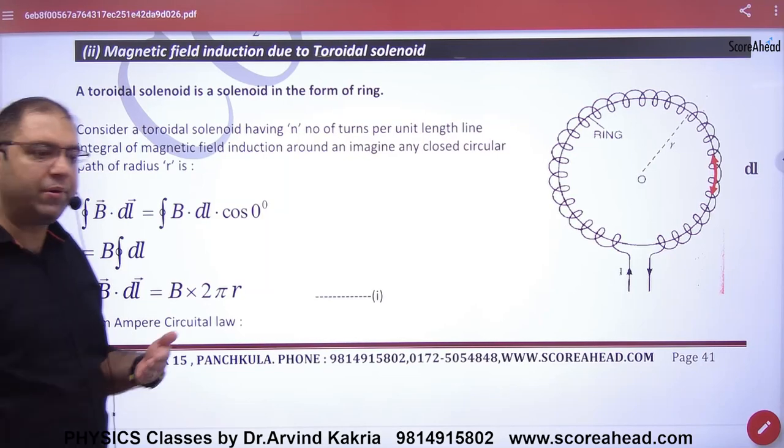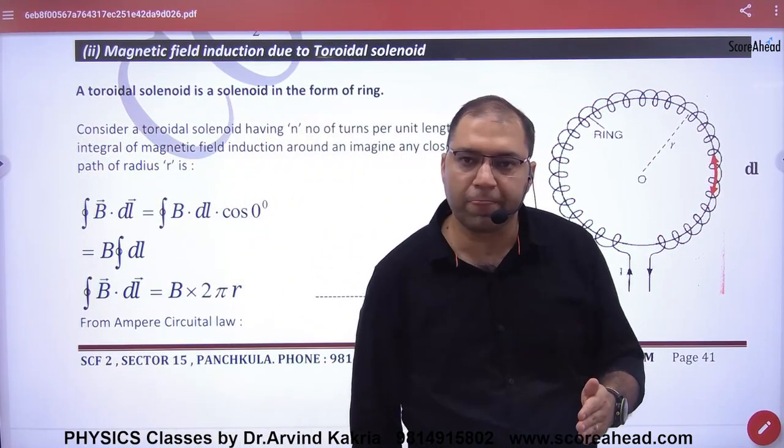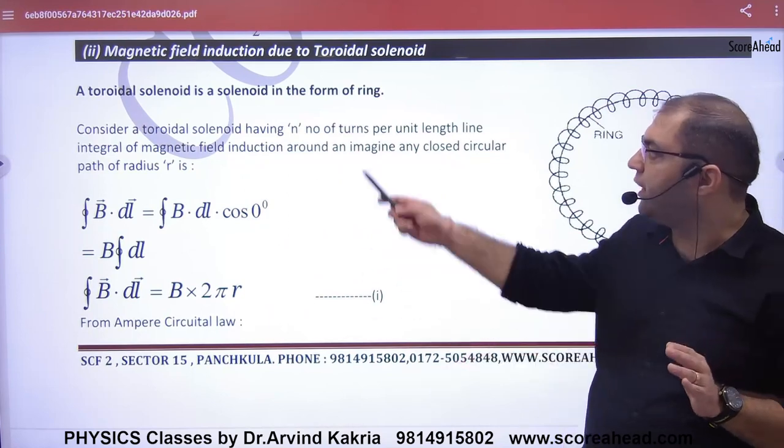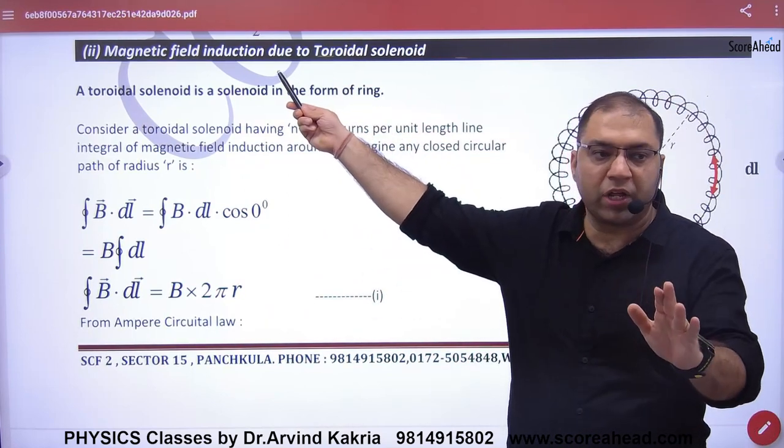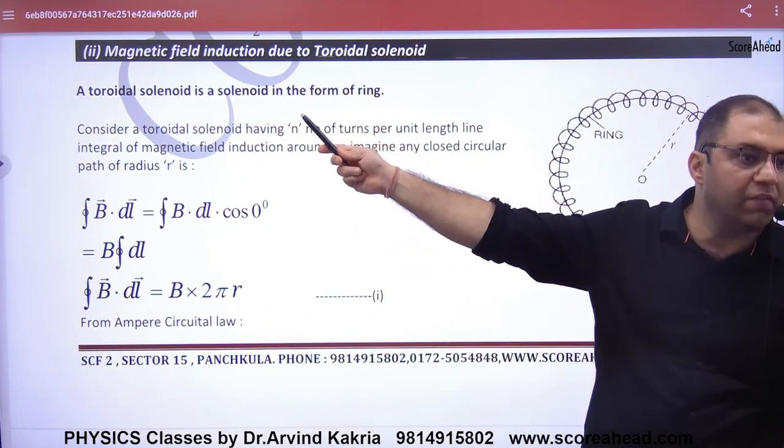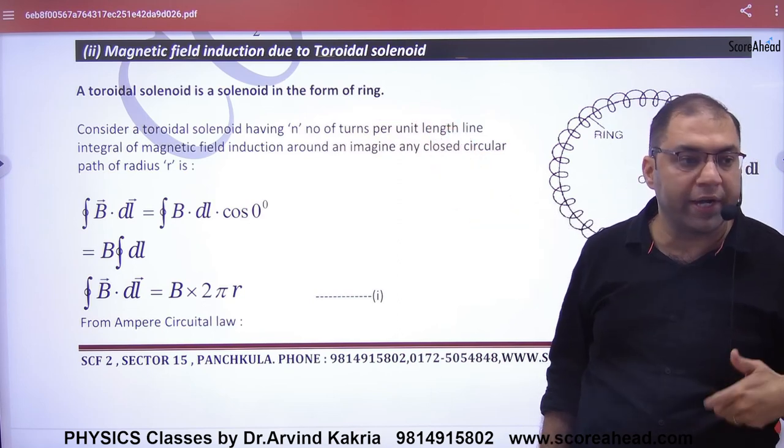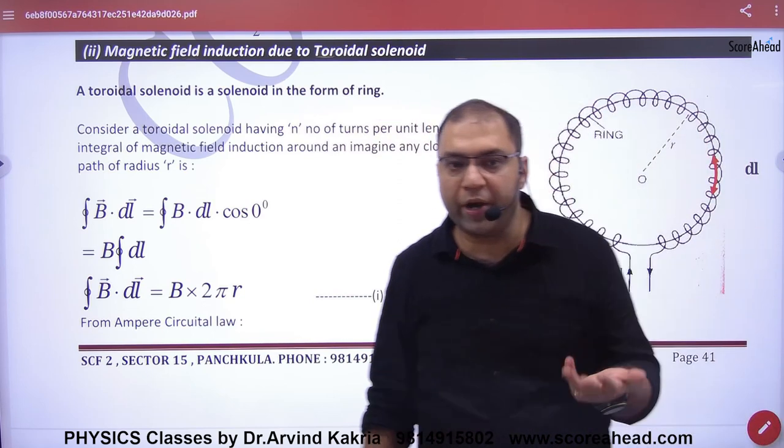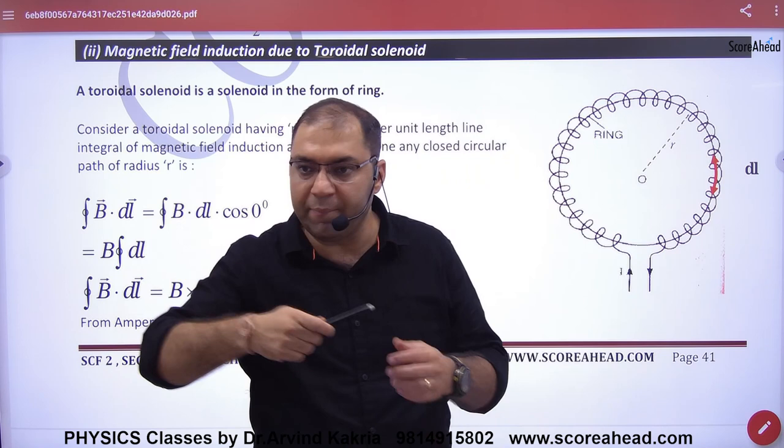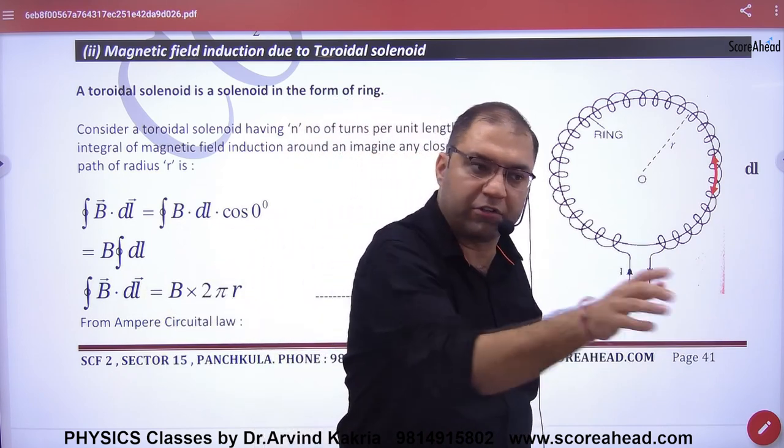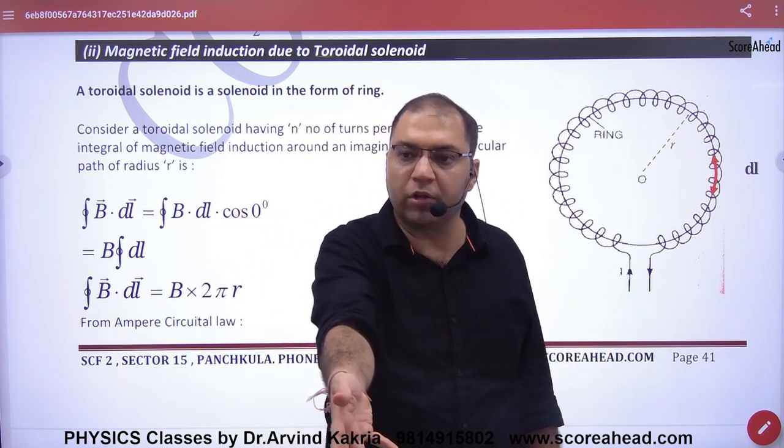Second application of Ampere Circuital Law to find magnetic field B, magnetic induction or magnetic field B due to toroidal solenoid. A solenoid was straight, so what is a toroidal solenoid?